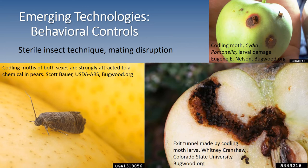Behavioral controls are another method that can be very important in crop protection. These include sterile insect techniques as well as mating disruption. Here on the left we have an image of an adult codling moth — a major fruit pest. On the upper right we have the exterior of an apple infested by a codling moth larva, and the lower right shows what the exit hole looks like on the inside and the extensive damage from tunneling made by the codling moth larva.